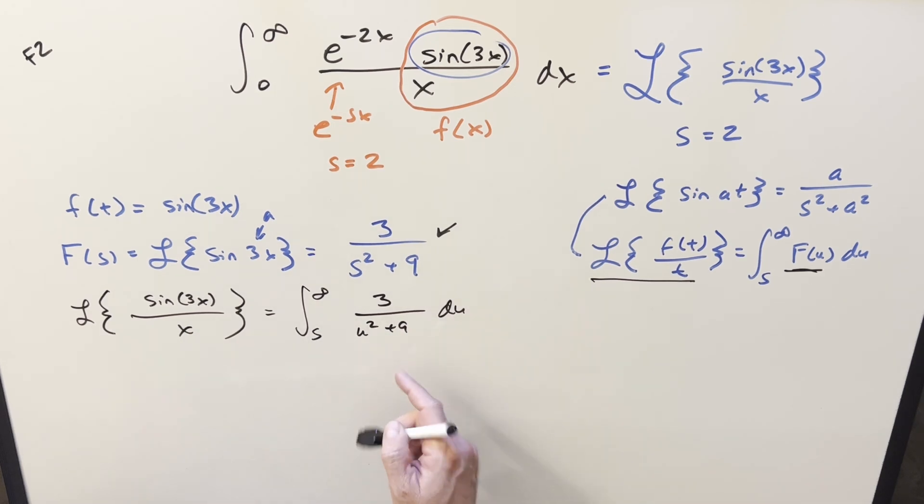But now this right here is perfectly set up for our arctan formula. Maybe to make it a little clearer, I can write this as 3 squared. And we can take this 3 and bring it up front of the integral, right? Bring it out here as a constant.